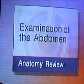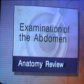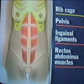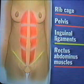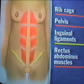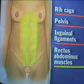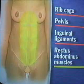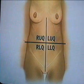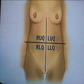Before beginning the examination, let's review the structures of the abdomen. The abdominal wall extends from the rib cage above to the pelvis and inguinal ligaments below. The rectus abdominis muscles can be identified when a person raises both head and shoulders from a supine position. Palpation is easier lateral to these muscles. For descriptive purposes, the abdomen is divided by lines that cross at the umbilicus.